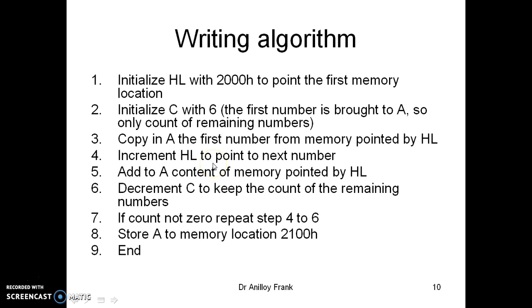Next, we use the increment. We increment the pointer to point to the next number. The content of the memory is then added to A. Now, the remaining numbers is 5. So, we decrement the count. The count indicates the remaining numbers. If the count is not 0, when we decrement the count, if the count is not 0, we repeat steps 4, 5 and 6. Then, we store the value of the result at memory location 2100. As the result is in accumulator, it is stored in 2100.